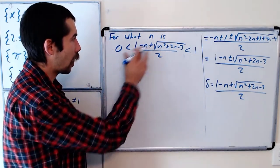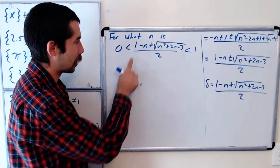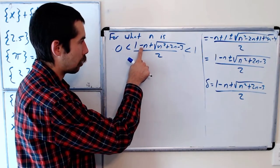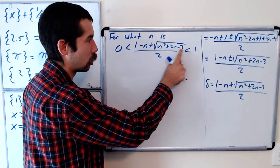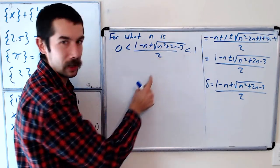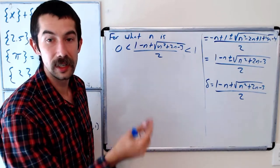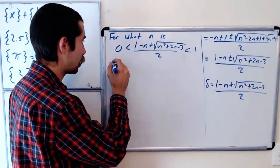Okay well if n equals 1 what do we get? We get 1 minus 1 that's 0 plus the square root of 1 plus 2 minus 3. So it's 0. 0 is not greater than 0. So n does not equal 1.